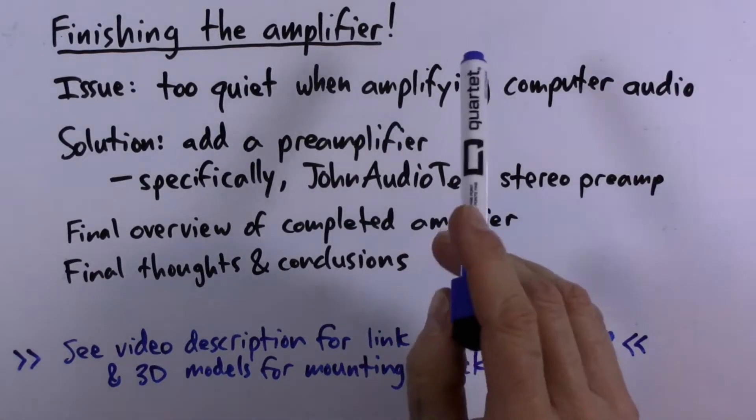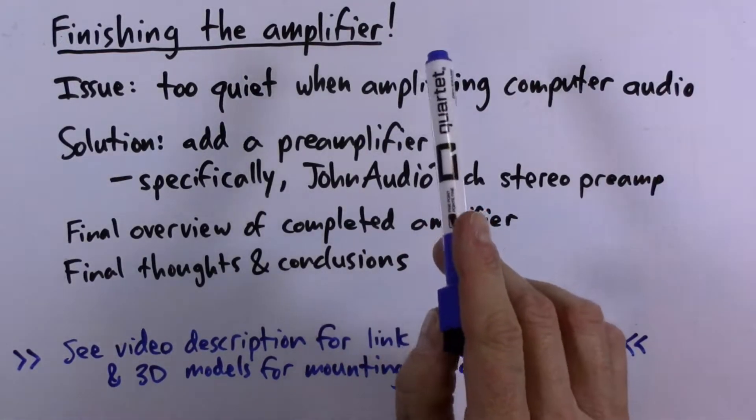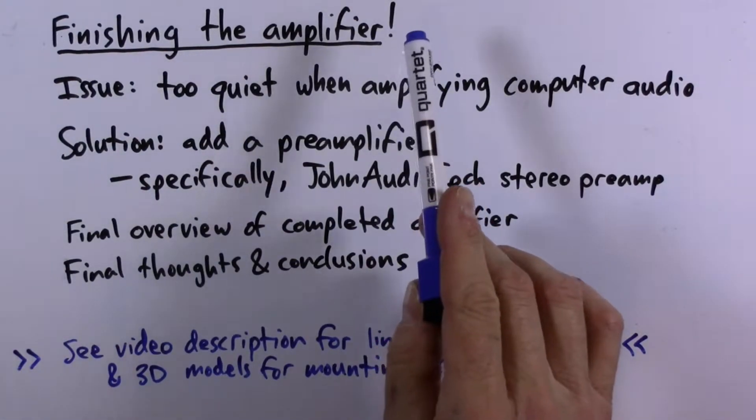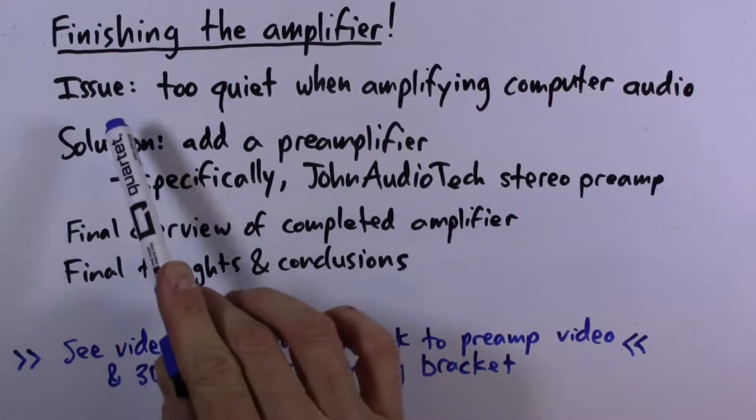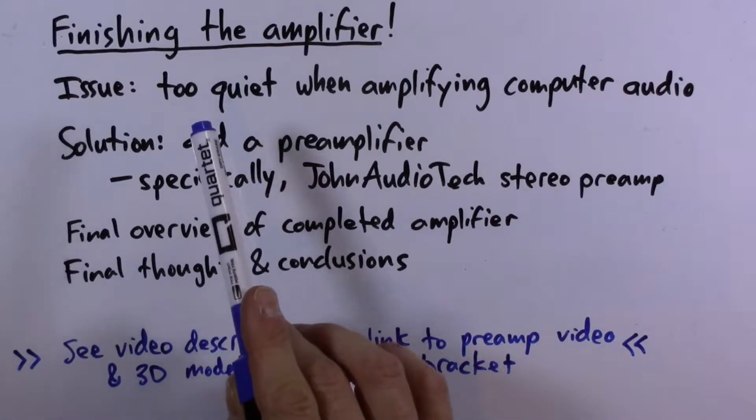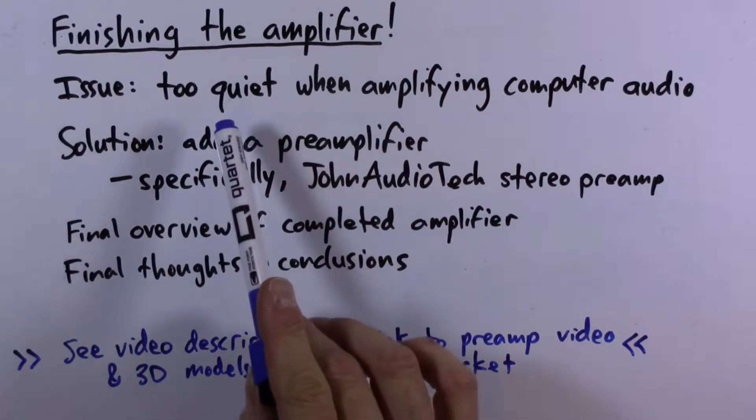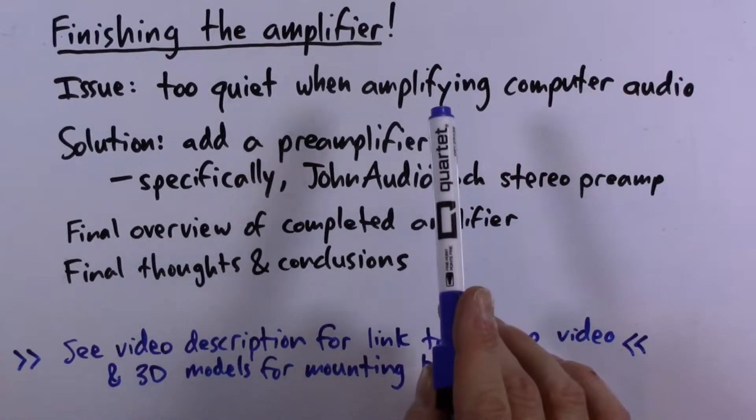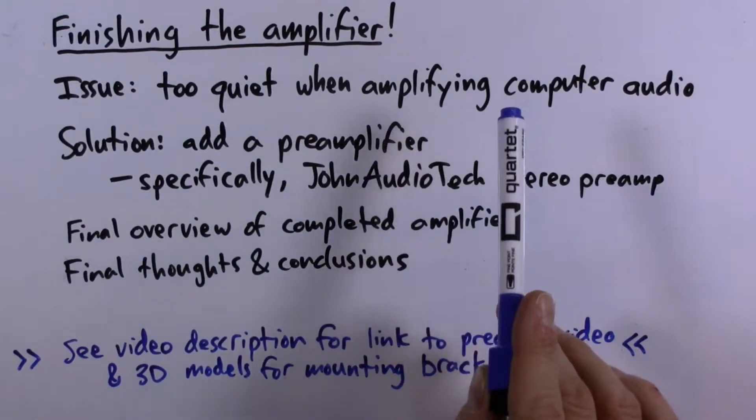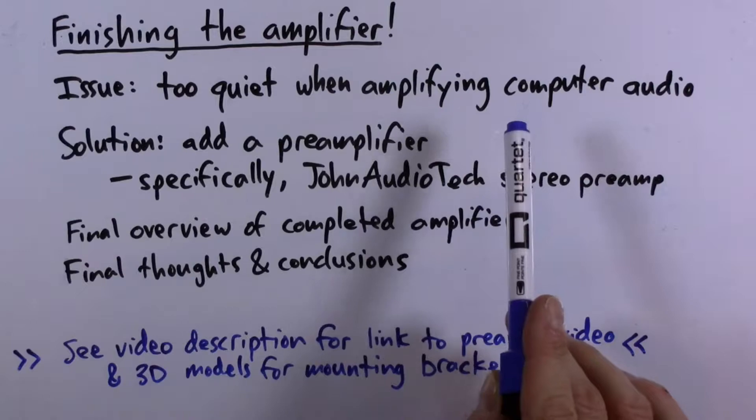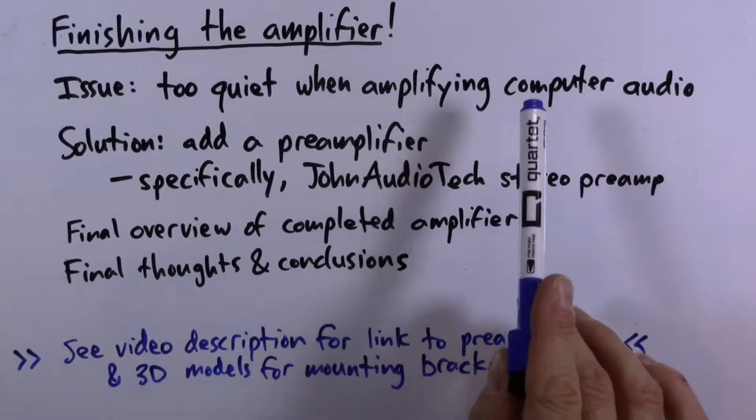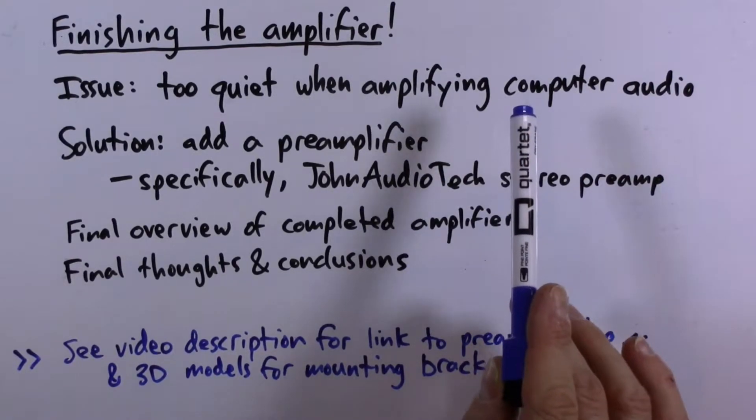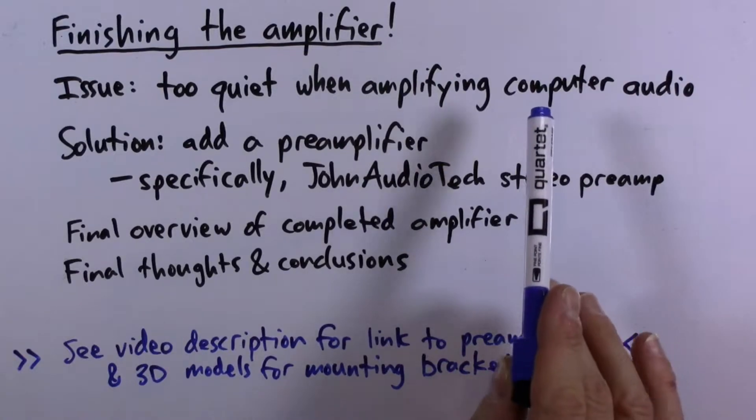All right, welcome to episode three of the amplifier project. In this episode we will finish the amplifier. There is just one remaining issue to address. I've actually been using the amplifier for a few months and basically it's much too quiet when it amplifies the sound coming from the output of the computer. The signal level that is generated by the computer's line out is much too low to produce reasonable volumes when fed directly into the LM1875 amplifier module.